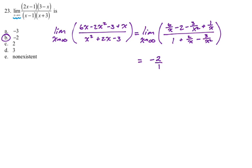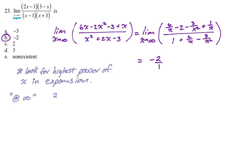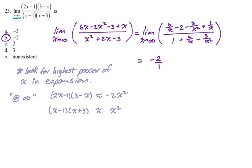You actually could have done this just by looking at the highest power of x in the numerator and denominator when you expand. So look for the highest power. At infinity, 2x minus 1 times 3 minus x is approximately negative 2x squared — the x squared term is so much more powerful that the other stuff is inconsequential. And x minus 1 times x plus 3 is approximately x squared. So we're basically doing negative 2x squared divided by x squared, which gives you negative 2. That's another way to do it informally, certainly on multiple choice. For open-ended, I would do the more formal work.